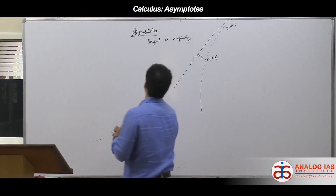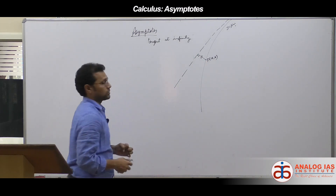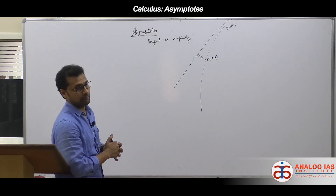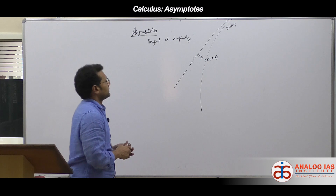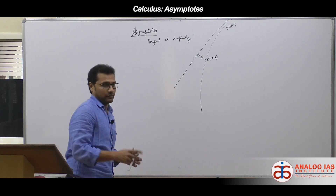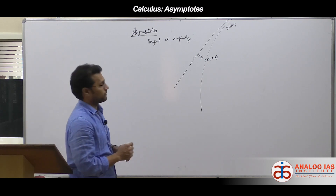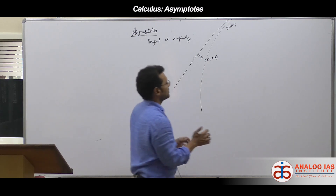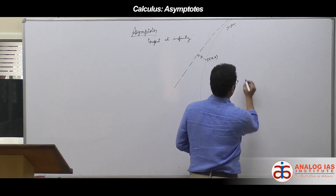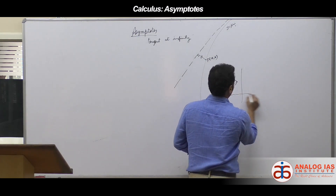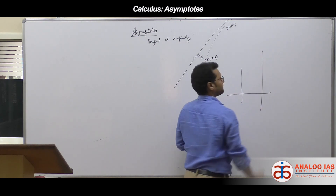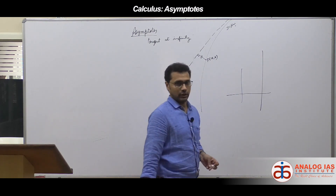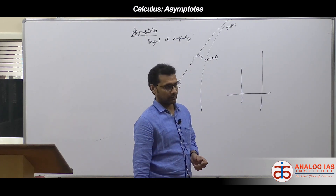Tangents at infinity are called asymptotes. Now, there are different types of asymptotes. One type is a vertical asymptote.